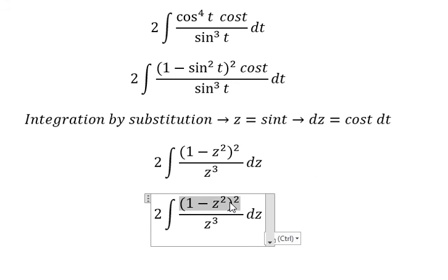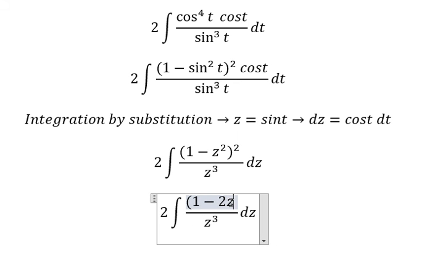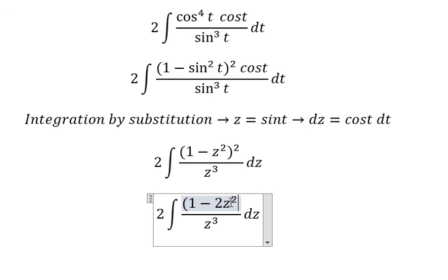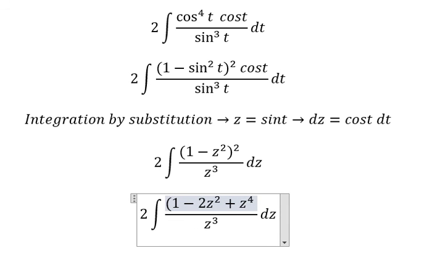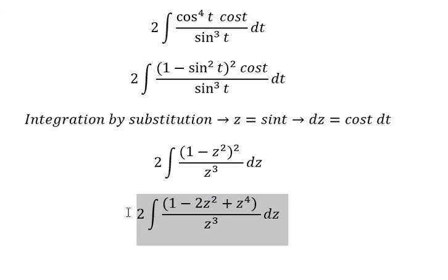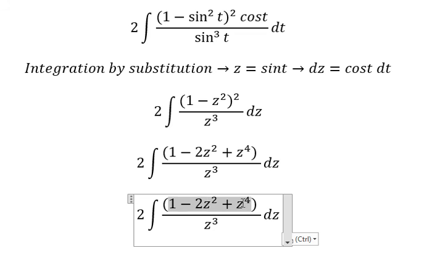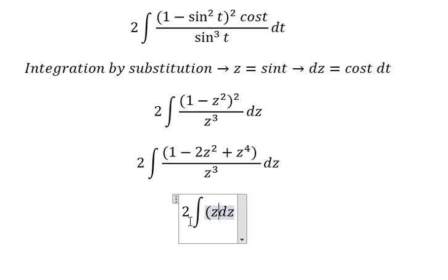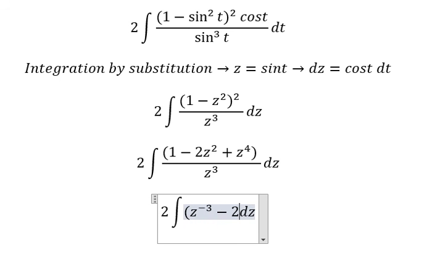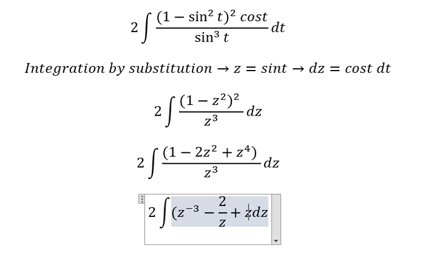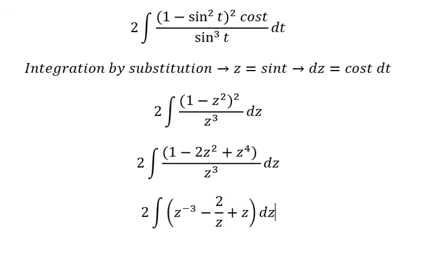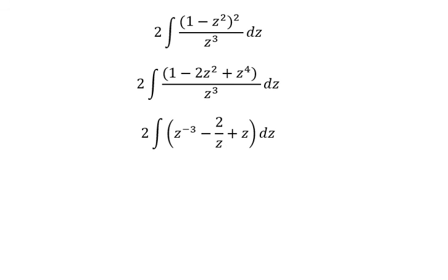We divide the expression by z to the power of three, so we get z to the power of negative three, minus two over z, plus z. Now we have the terms ready for the final integration.